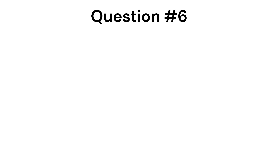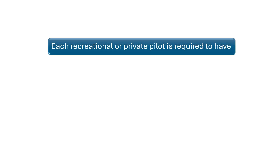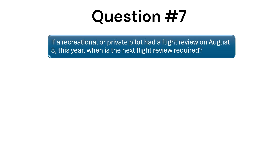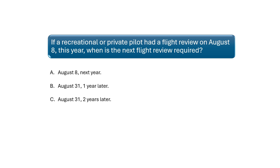Each recreational or private pilot is required to have a biennial flight review — biennial means every two years. The correct answer is B. If a recreational or private pilot had a flight review on August 8th, the next flight review is required on the last day of the month two years later. So if it occurred on August 8th of 2025, it would be due August 31st of 2027.